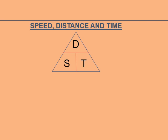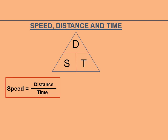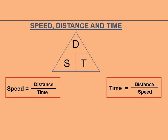Yesterday we saw the units of speed, distance, and time, and also the triangle which will help you to calculate speed, distance, or time. The triangle has D, S, T written inside it. If you cover S, speed is equal to distance upon time.